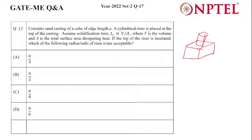the top of the casting. Assume solidification time ts is proportional to v by a, where v is the volume and a is the total surface area of dissipating heat. If the top of the riser is insulated, which of the following radii of riser are acceptable?